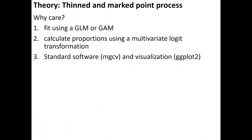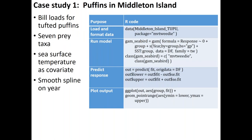Why would we care about this marked point process? We can calculate proportions using a multivariate logit transformation on the output, and do that all using standard software in R like the MGCV package and GGplot to visualize results. The first example used data generously provided by Scott Hatch for Middleton Island. We load data from the package, run a GAM with a spline on year by group where group is the prey species, predict the response using a predict call, and use GGplot to visualize output — making a time series plot of seven different prey for tufted puffins on Middleton Island.